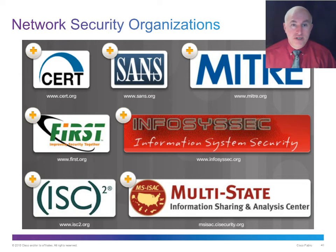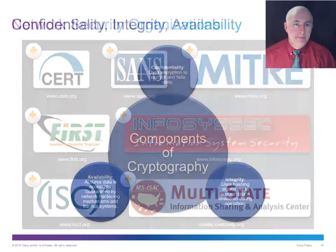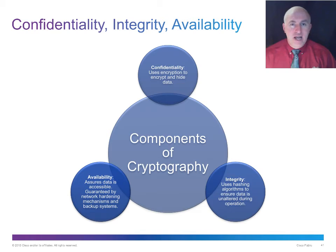SANS is a must-visit site — like a Wikipedia of network security with papers, a threat database, and links to many other sites. Its primary job is education. The CIA triad — visualized as a triangle — breaks cryptography into three categories: confidentiality (hiding and encrypting data), integrity (ensuring data is unaltered, using hash algorithms), and availability (ensuring data isn't succumbed to DDoS or other attacks).